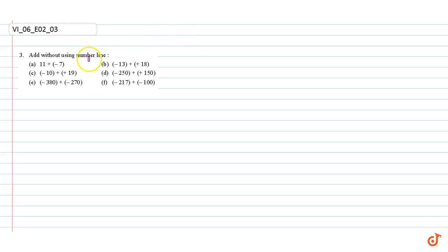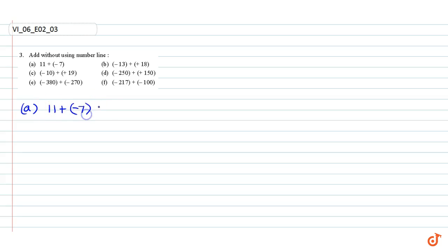In this question we have to add two numbers without using a number line. Part a: 11 plus minus 7 is equal to 11 minus 7, which is equal to 4.